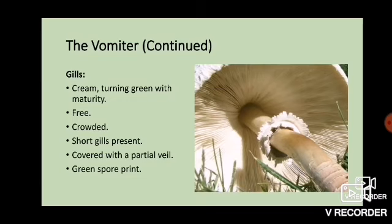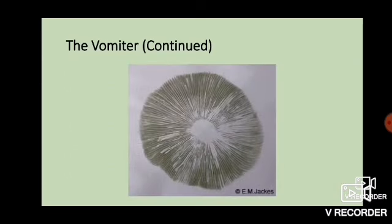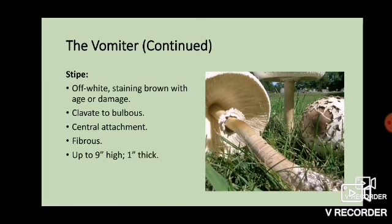Doing a spore print often doesn't get you to species — usually it just gets you to genus — but this is the exception to the rule. The stipe is off-white, staining brown with age or with damage. It is clavate to bulbous — basically the same width throughout with a kind of ball at the end — with a central attachment to the cap. It is very fibrous and up to about nine inches high and one inch thick at its largest.